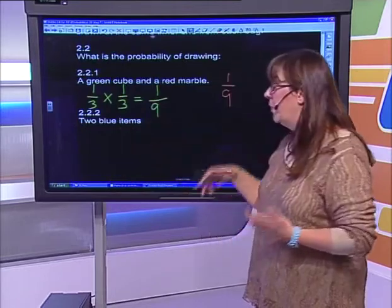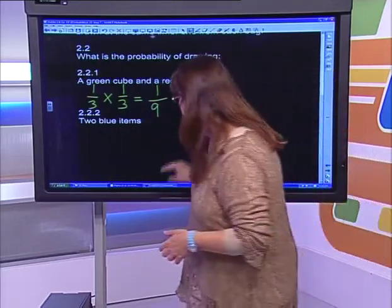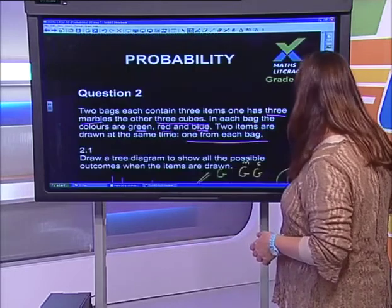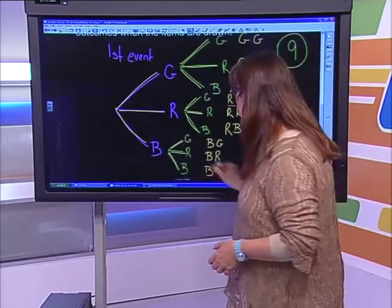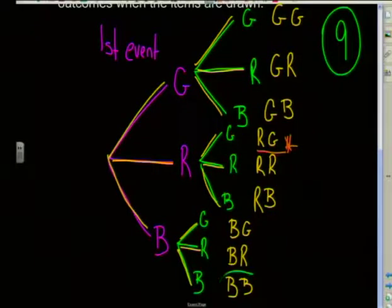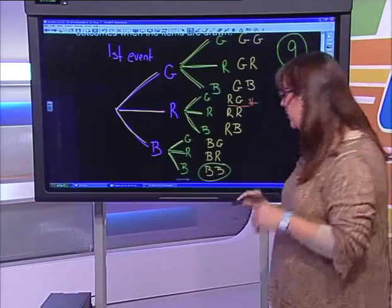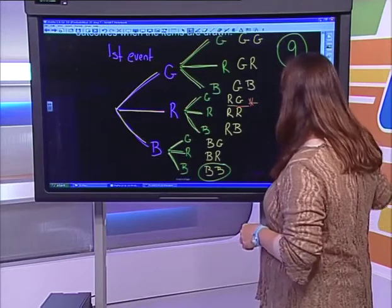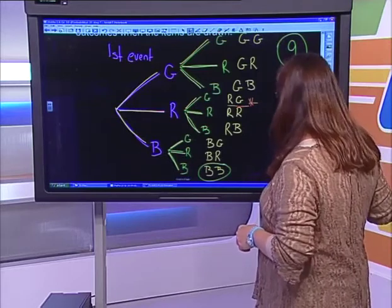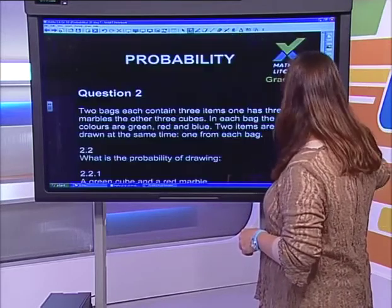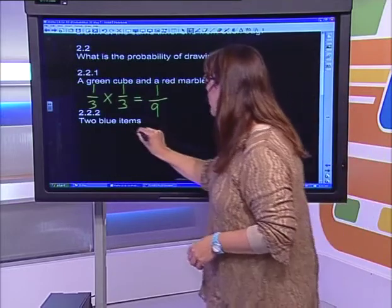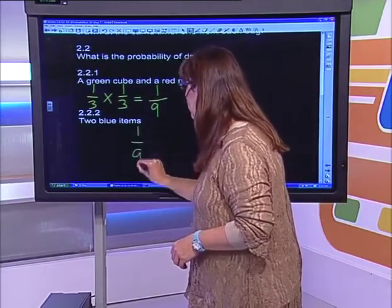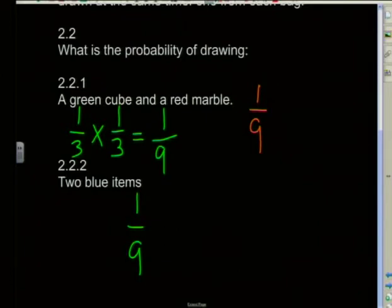What's the probability of getting two blue items? Going back to the tree diagram, among all outcomes that were blue, there was only one blue-and-blue combination. So again, the answer is one out of nine. We could have done it mathematically as well.